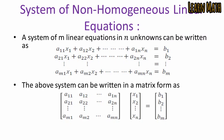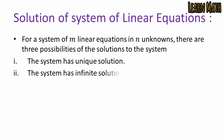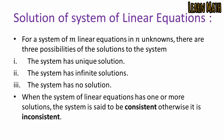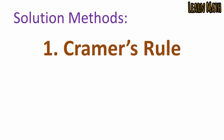For a system of m linear equations and n unknowns, there are three possibilities: the system has a unique solution, the system has infinitely many solutions, or the system has no solution. When the system has one or more solutions, it is said to be consistent; otherwise it is inconsistent. To solve a system of linear equations, we can use Cramer's rule or the Gauss elimination method.